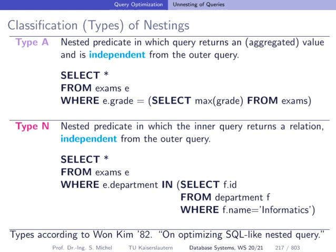A paper by Kim from 1982 on optimizing SQL-like nested queries suggests classifications of different types of nestings. Let's look at Type A — a very simple nested query. Here we have a predicate in the WHERE clause that checks if the exam grade of the current exam equals the maximum grade of all exams in the exam table.